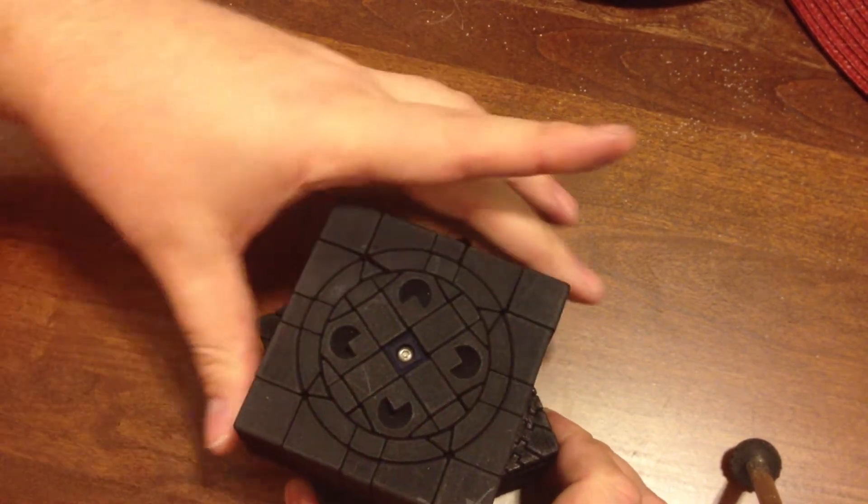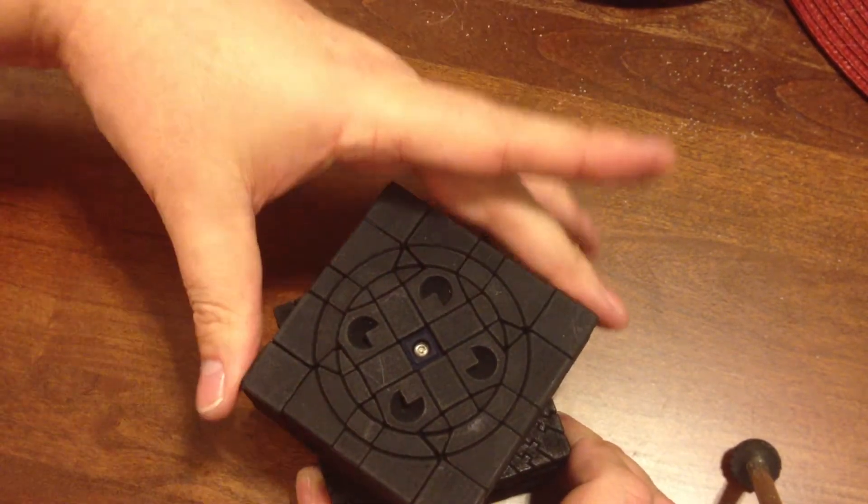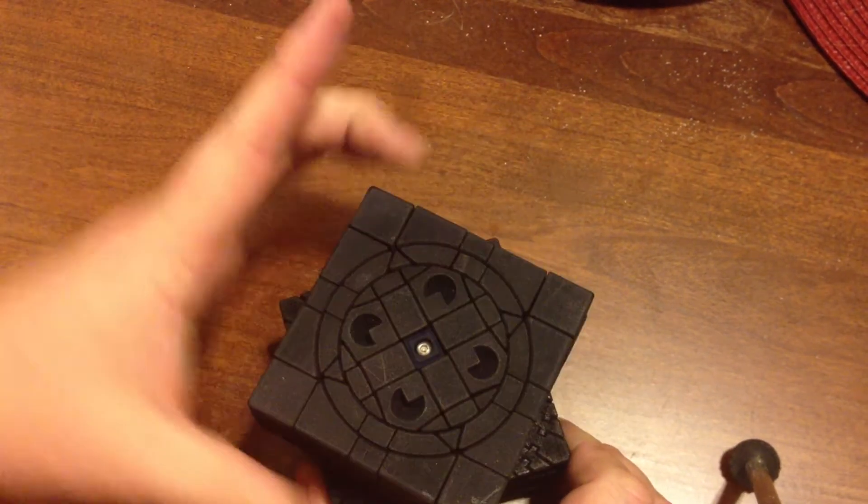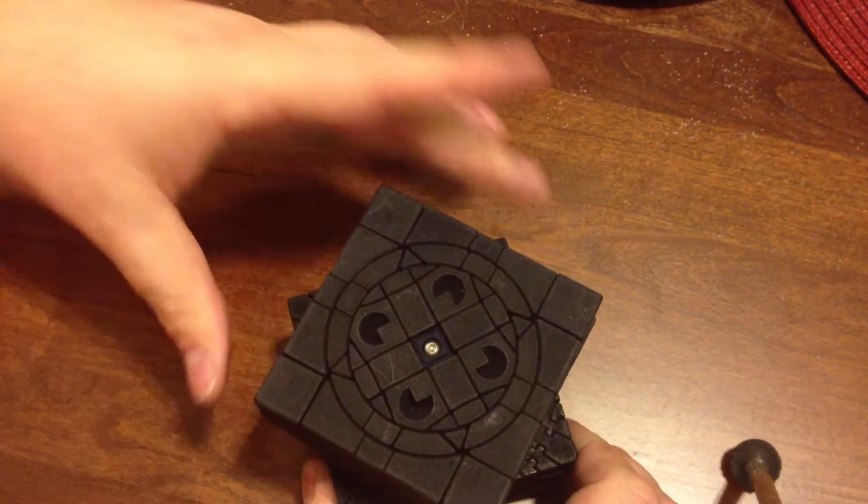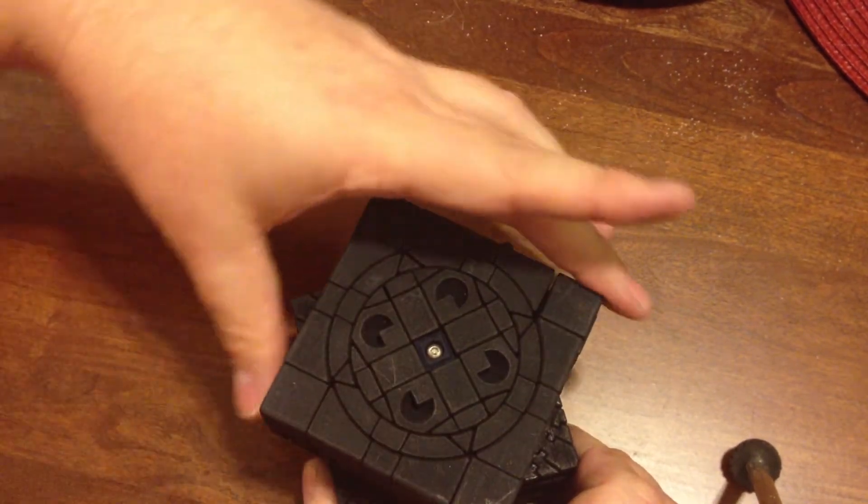Now if I turn one of the 3x3 layers below it, you can see that the outer circle rotates with the face. But the center circle is not rotating. So I have now effectively got this puzzle working the way it was originally intended to work.